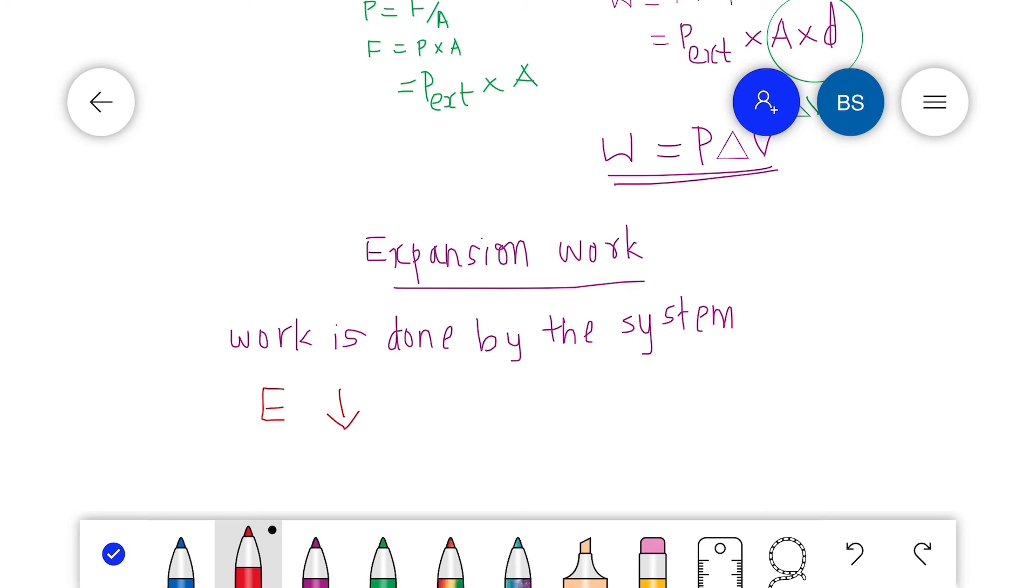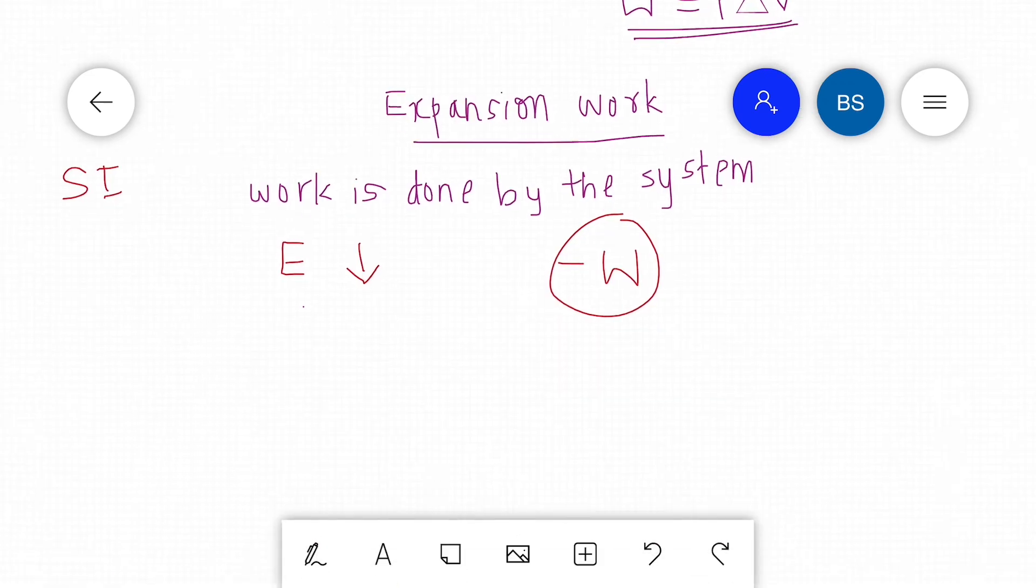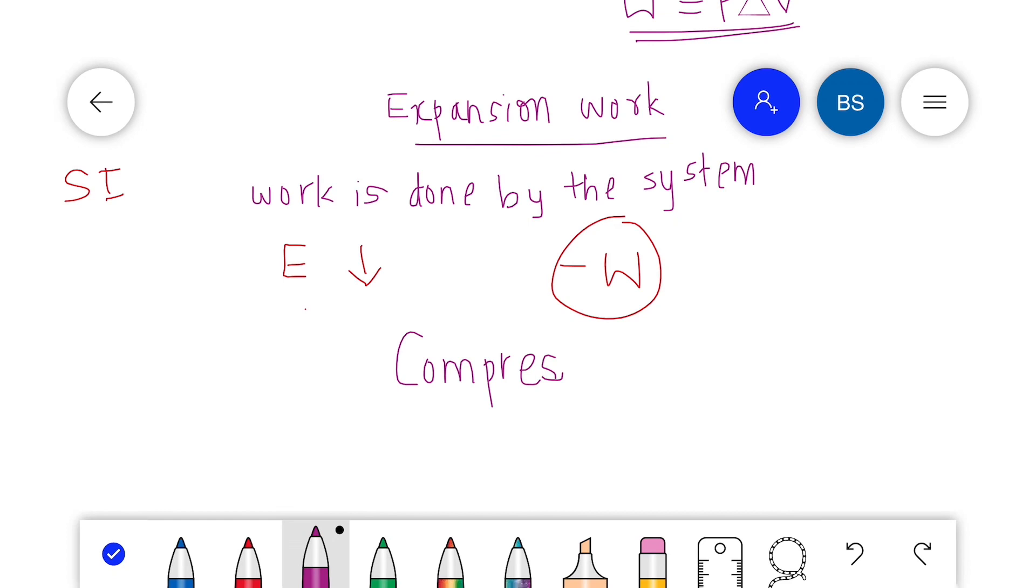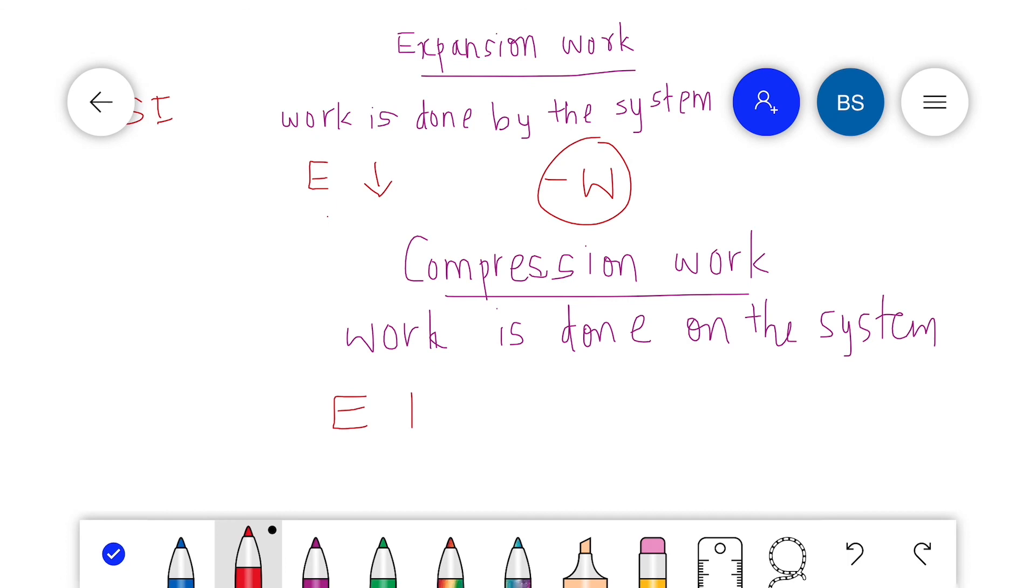When the system does work, the energy of the system will decrease. The latest SI conventions say that when the system does work, we use negative W. In compression work, work is done on the system, and the energy of the system will increase. So SI conventions say that we should consider this positive work. That is for today, thank you.